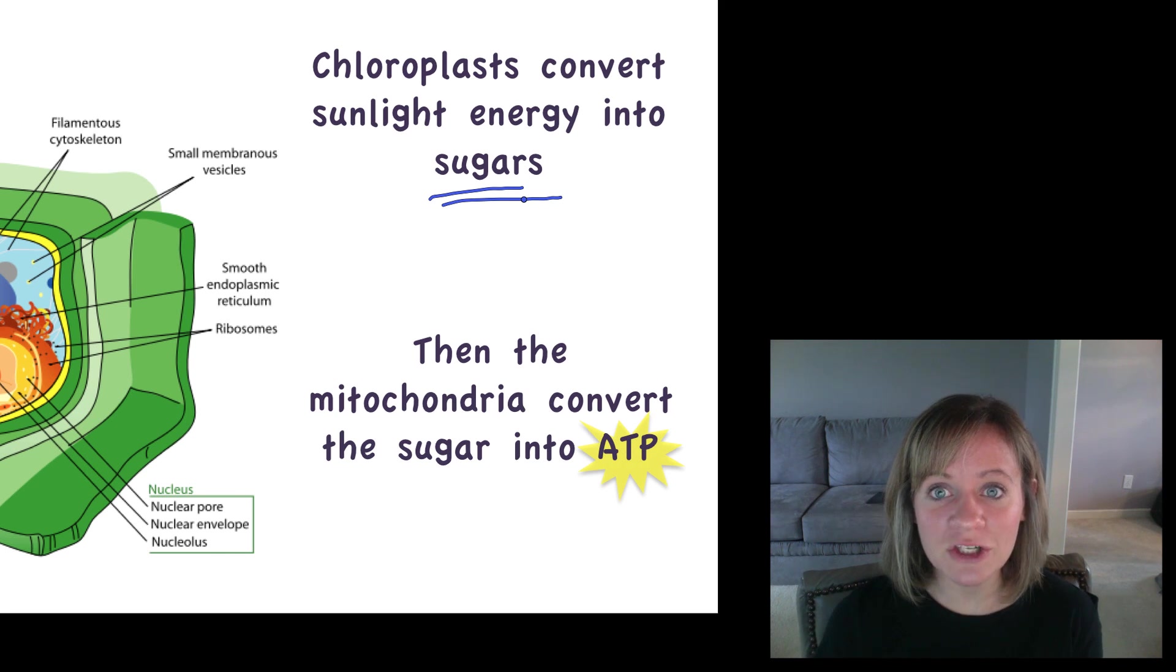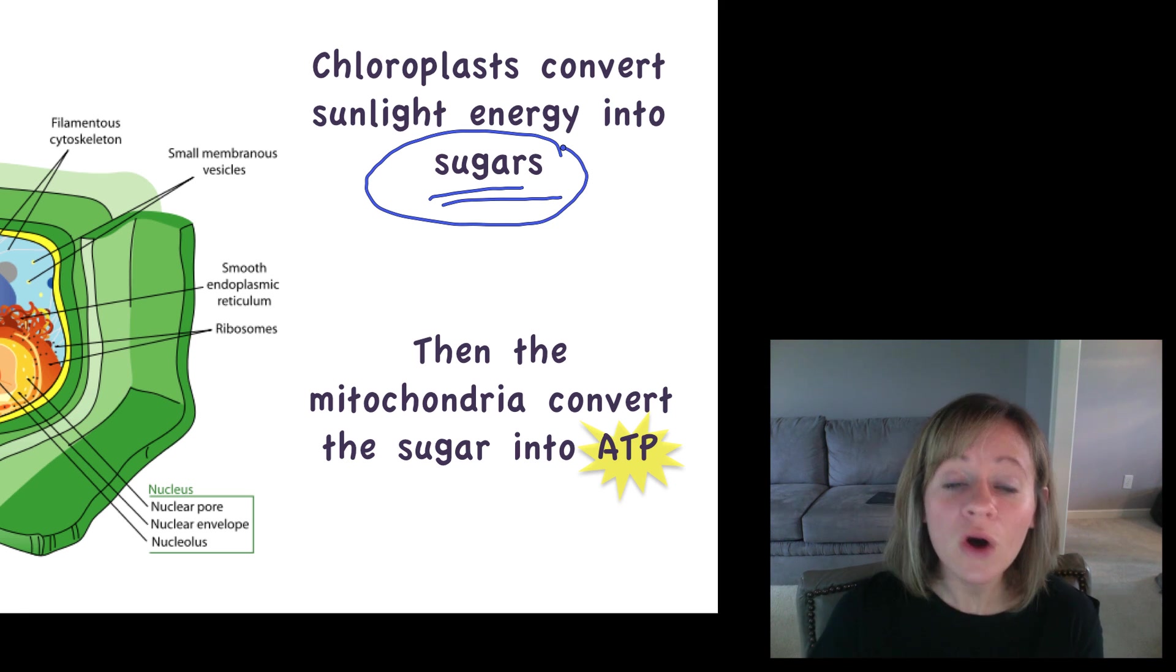Then the cell can use that energy molecule to move, to communicate, to do all sorts of cellular functions, get things inside the cell, get things outside of the cell. Sugars alone cannot do all of that. Sugars are good for building their cell wall. They're good for energy storage, but that's pretty much all they're good for. So the mitochondria take that sugar and make ATP.